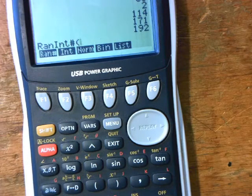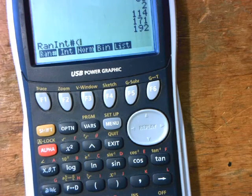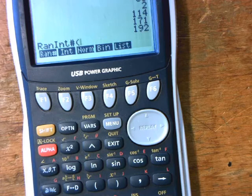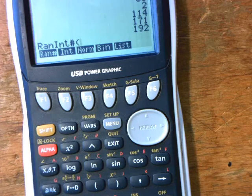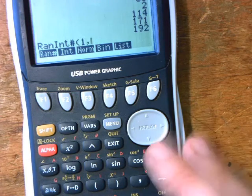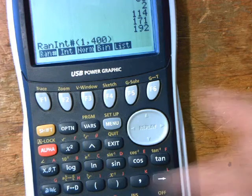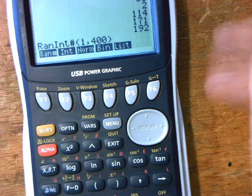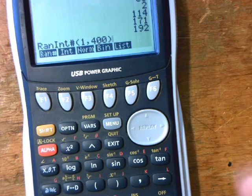To choose a random number, I'm going to use my graphical calculator. I'm going to type into my graphical calculator ran int hash brackets 1 comma 400 brackets. This will give me a random number between 1 and 400.